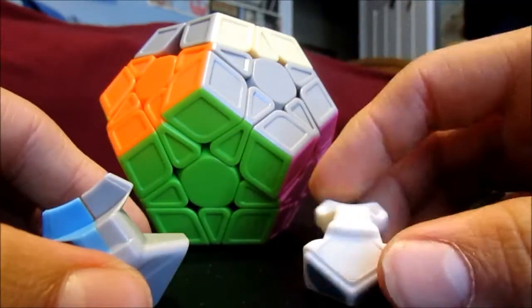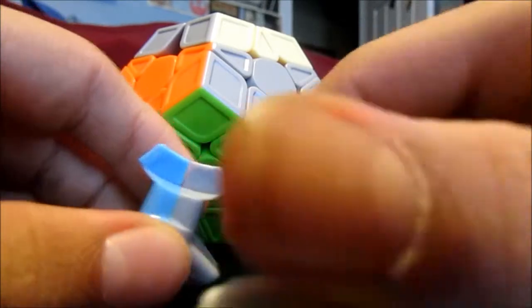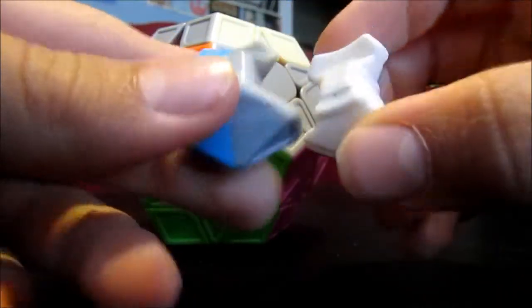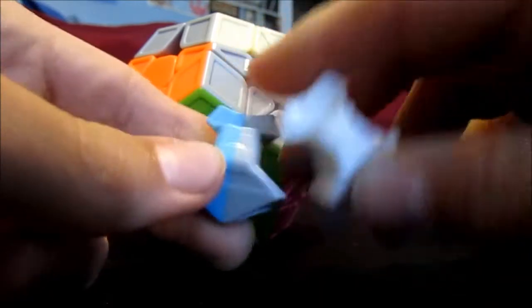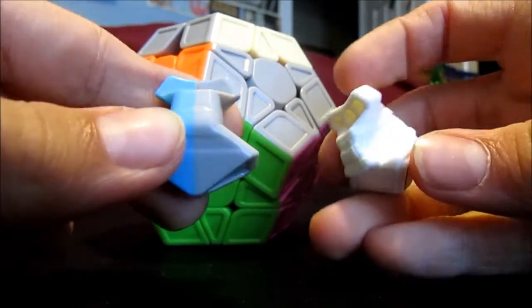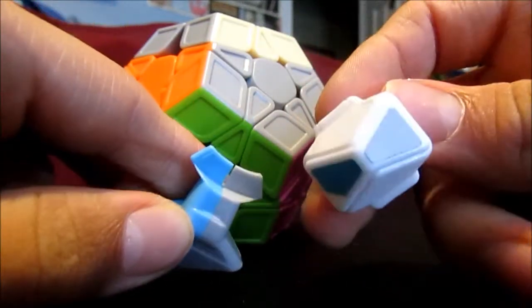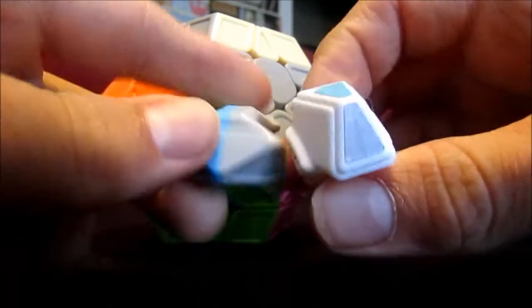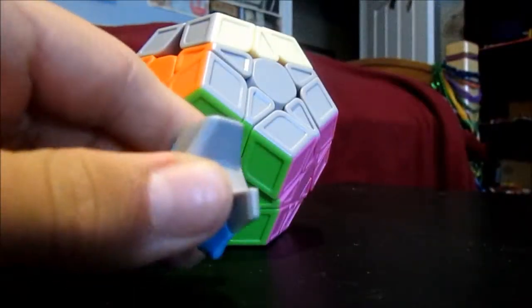This is a piece from the YJ Guanhu Megaminx, which is a very cheap one. Looks like this has minimized the amount of ridges in this one. And it's overall just a thinner piece in this one, which is much thicker. But this one is still a smaller piece, as you can see. Very different pieces.